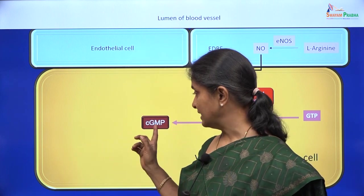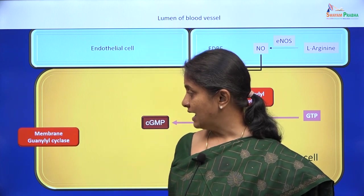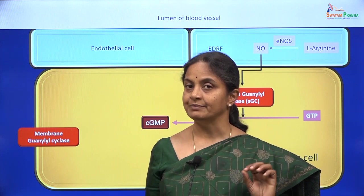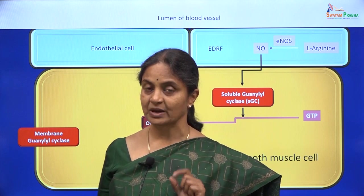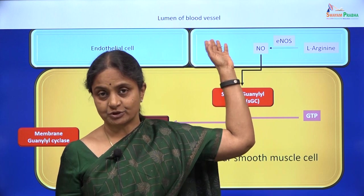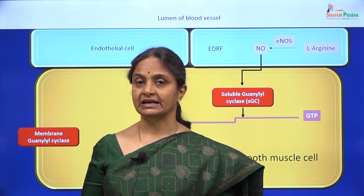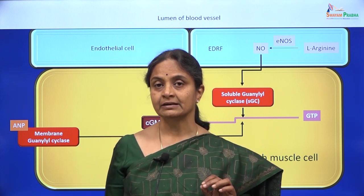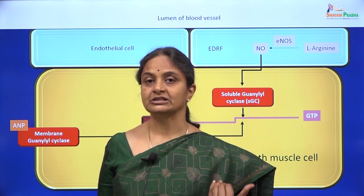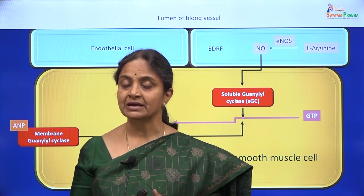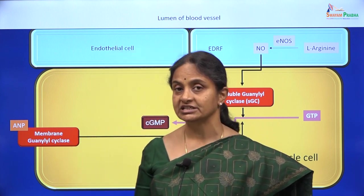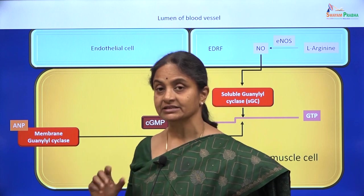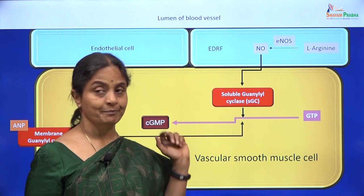There are other ways in which cGMP levels can increase in the vascular smooth muscle cell, and that is by activation of the membrane guanylyl cyclase. Just like we had a membrane adenylyl cyclase, there is a membrane guanylyl cyclase as well. While adenylyl cyclase was activated by G proteins, guanylyl cyclase is activated directly by the ligand, and the ligand in this case is atrial natriuretic peptide — a hormone secreted by the endocardial cells of the atria. ANP can induce relaxation of blood vessels by binding to and directly activating the membrane guanylyl cyclase, increasing cGMP levels within the cell.